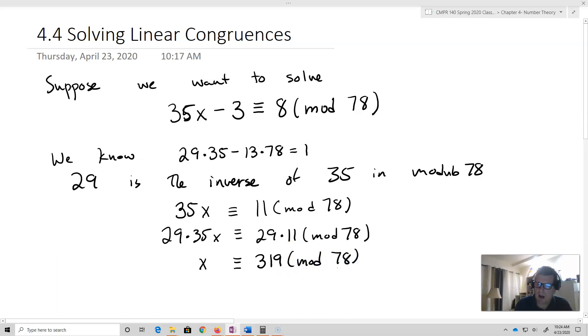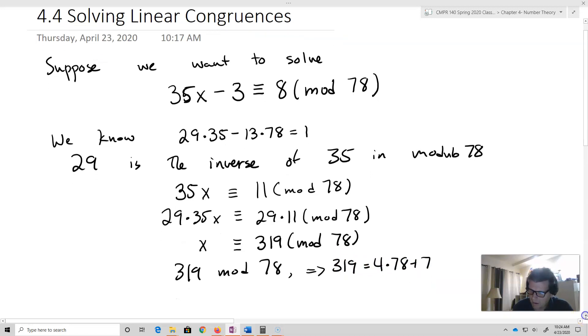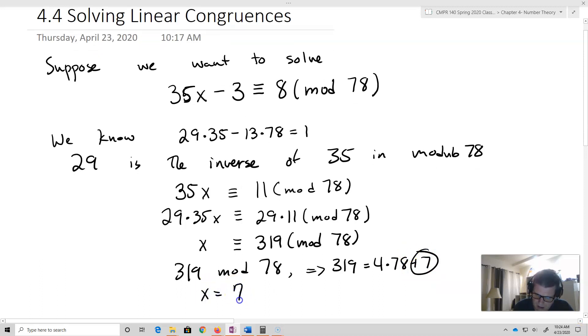so this is now x and that will be equivalent to 319 mod 78. Now all I've got to do is simplify that. So 319 mod 78. That's going to be 319 equals 4 times 78 plus 7. So that's my value. Hence x equals 7.